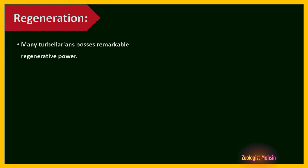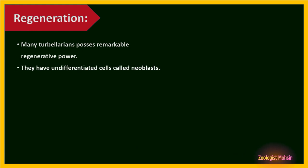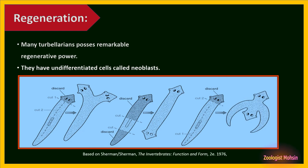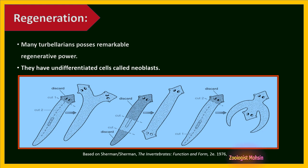Regeneration is a very famous phenomenon among Platyhelminthes. Many turbellarians possess remarkable regenerative power using undifferentiated cells called neoblasts. In the first scenario, if we discard the head, two heads develop. In the middle scenario, keeping only the middle portion generates two heads on both sides. In the third scenario, cutting the whole body and head longitudinally produces a U-shaped structure with two heads.